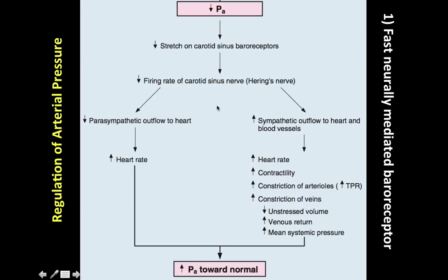The response is twofold. First, we need to decrease the parasympathetic outflow to the heart, because increased parasympathetic activity slows heart rate — and we need to increase heart rate. Second, we increase the sympathetic outflow to the heart. Together, these responses are needed to raise or normalize blood pressure in a patient experiencing an acute hemorrhage.